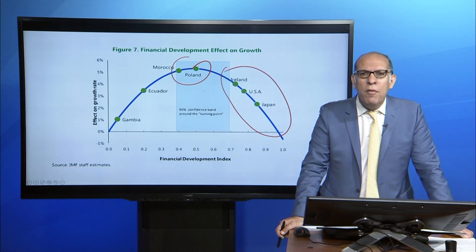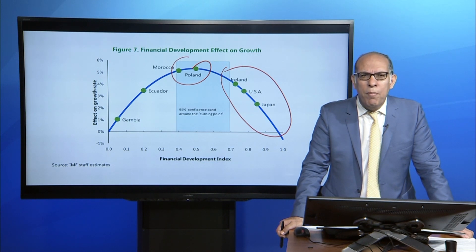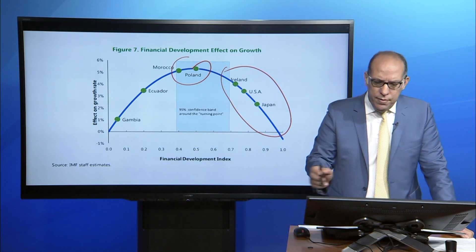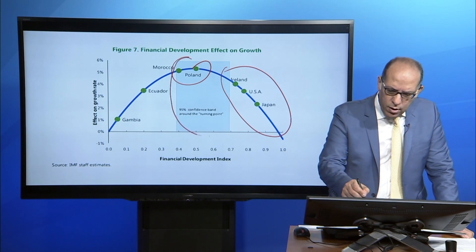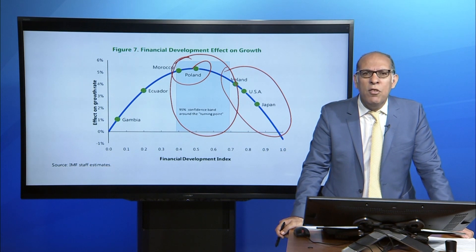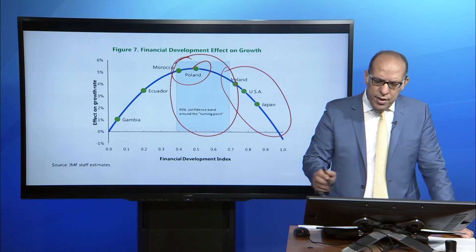This relationship confirms recent findings in the literature — Archon, Berkes, and Panizza, 2012. Figure 7 also illustrates where a set of countries at different stages of financial development lie on the estimated curve. It is worth emphasizing, however, that there is a wide band around the turning point, reflecting variation in country fundamentals and institutional settings. With a confidence level of 95%, the point at which the marginal impact of finance on growth becomes significantly negative is around 0.7.